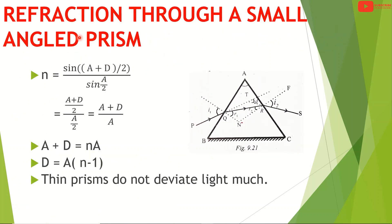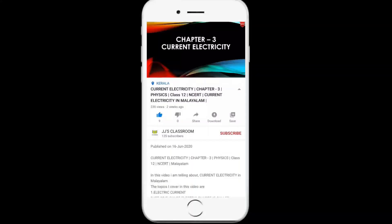For refraction through a small angle prism, the equation simplifies. n equals (A plus D) divided by A, which gives A plus D equals nA, and therefore D equals (n minus 1)A. Thin prisms do not deviate light much.